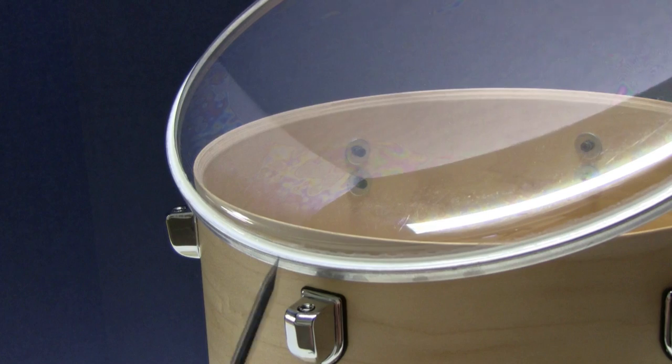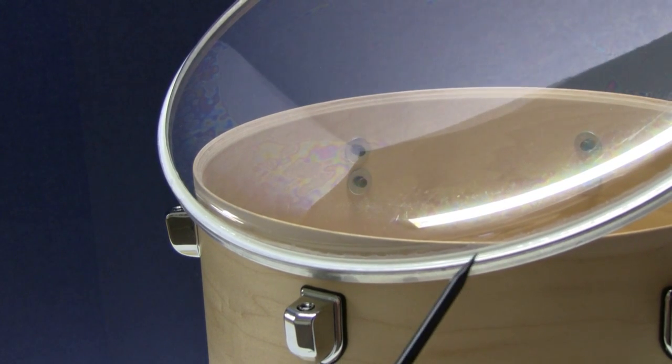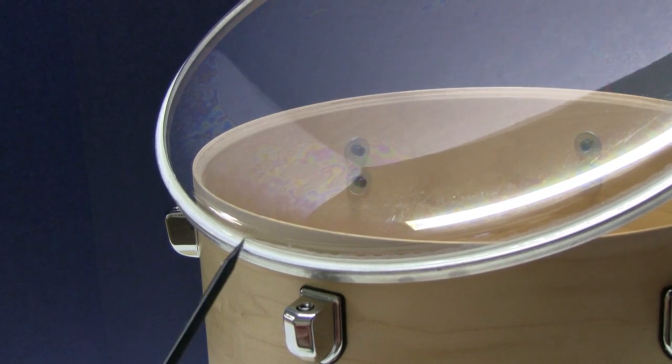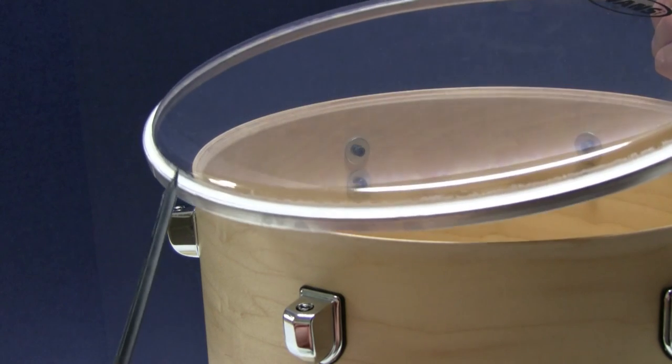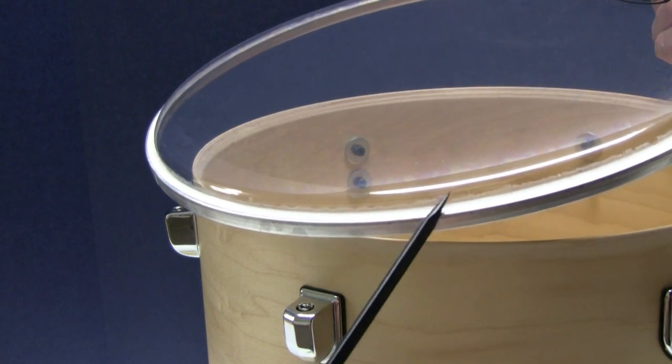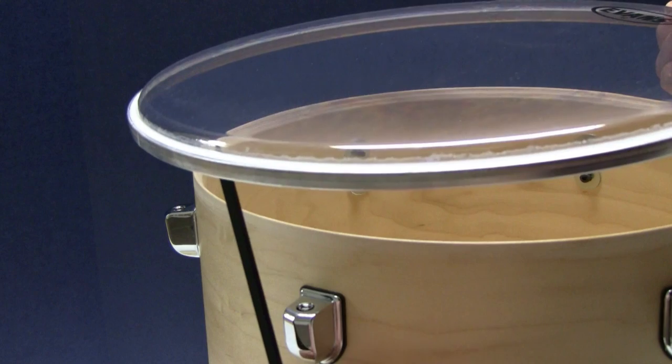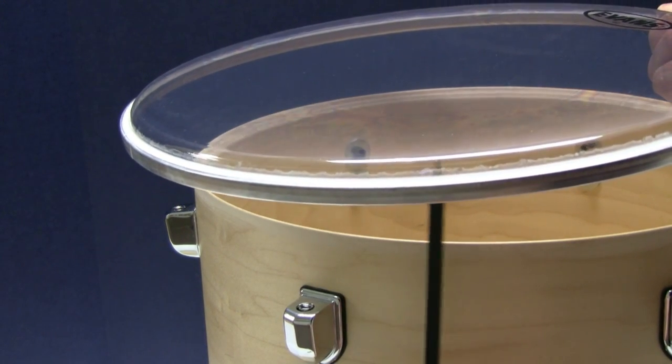This white ring at the edge of the drum head is the manufacturing epoxy that holds the drum head in place in the metal ring. Not all drum heads have it, but most do. This is the collar of the drum head that makes contact with the bearing edge.